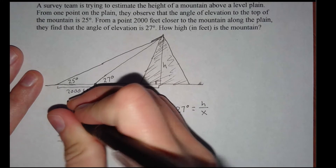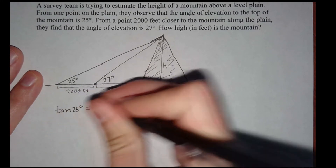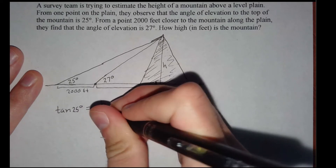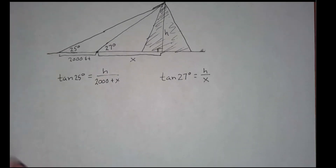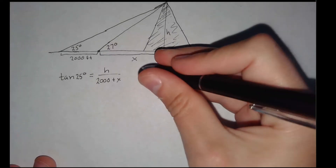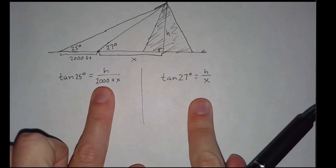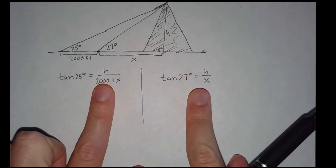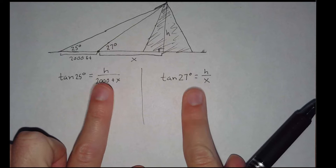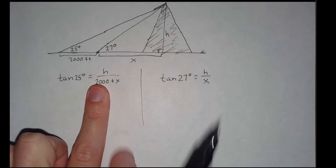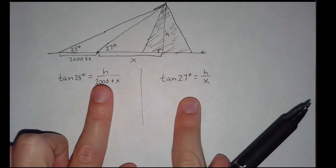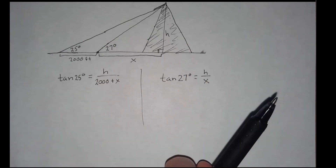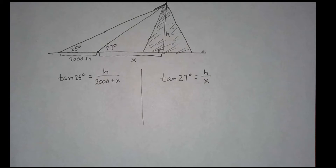So, tangent of 27 degrees equals h over x. Then looking at the larger right triangle with angle 25 degrees, its opposite side is h and its adjacent side is the entire length 2,000 plus x. So tangent of 25 degrees equals h over (2,000 plus x). I now have two equations with two unknowns, h and x, so I can solve this as a system of equations using substitution.